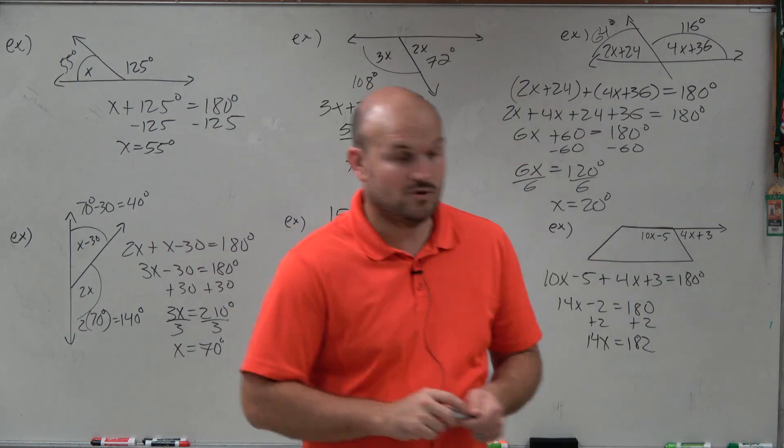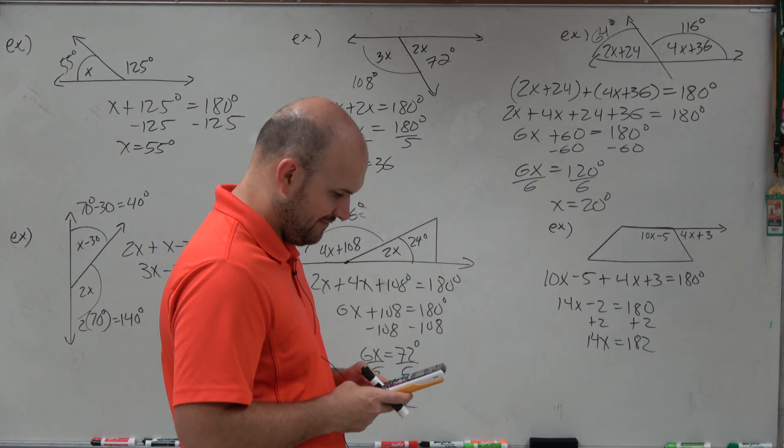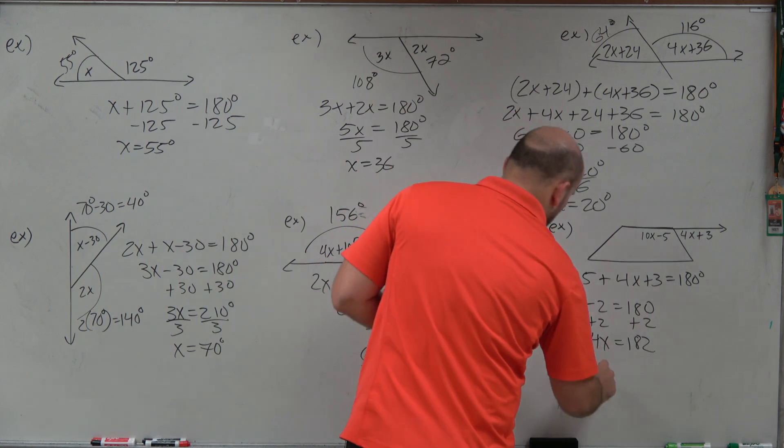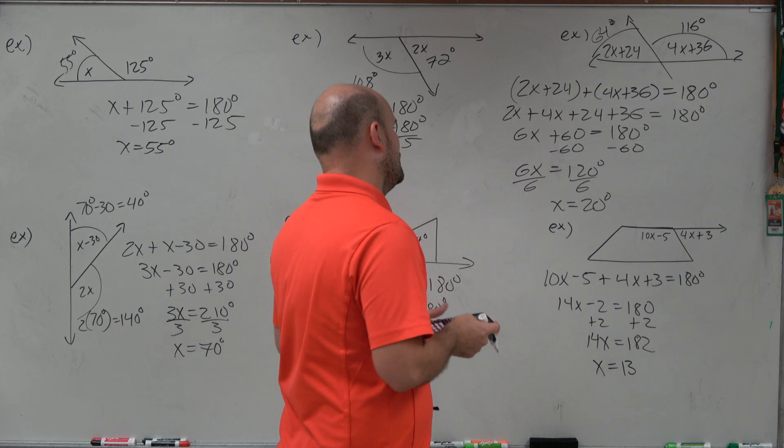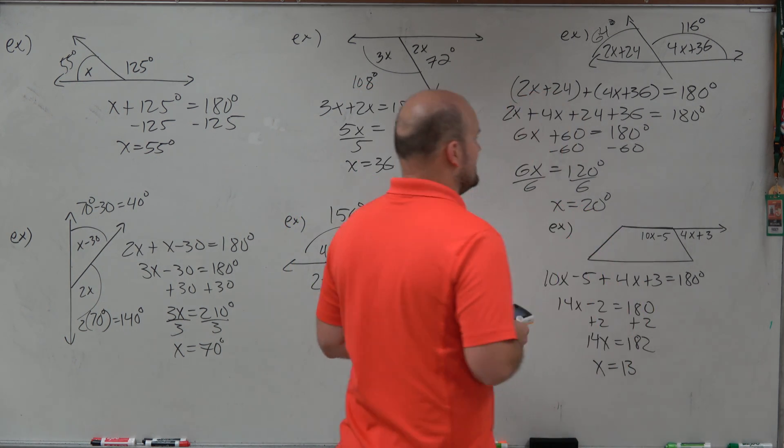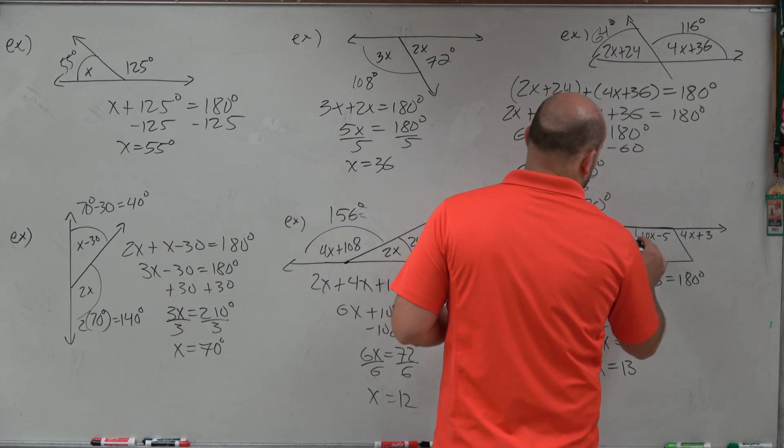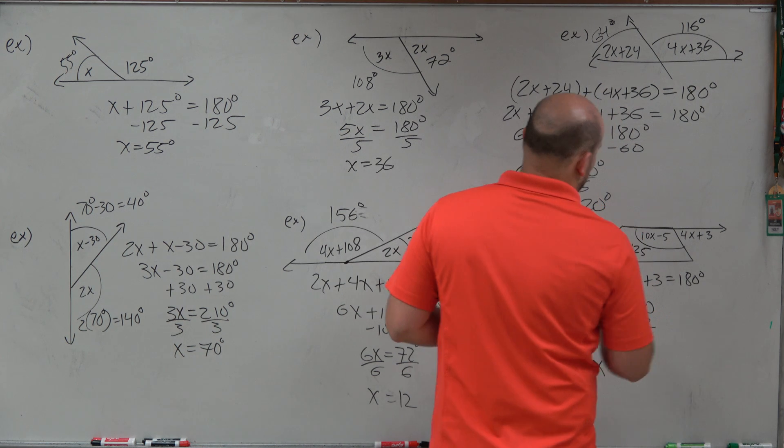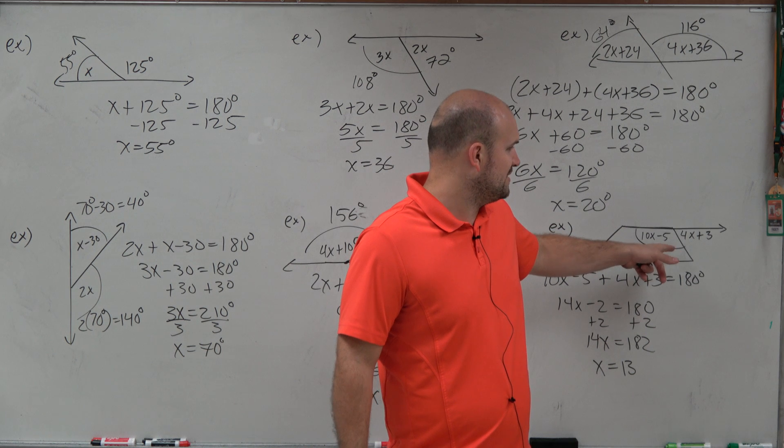14x equals 182. I do not know what that is, though, so I'm going to use a calculator on this. 182 divided by 14 equals 13. X equals 13. So now let's go ahead and plug this in. So 13 times 10 is going to be 130, minus 5 would be 125. Again, all I'm doing is plugging 13 in for x. 10 times 13 is 130, minus 5 is 125.